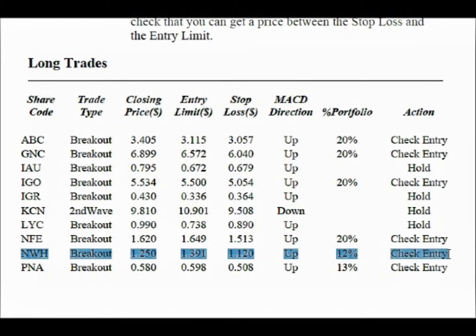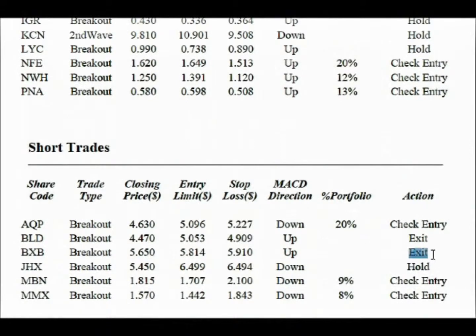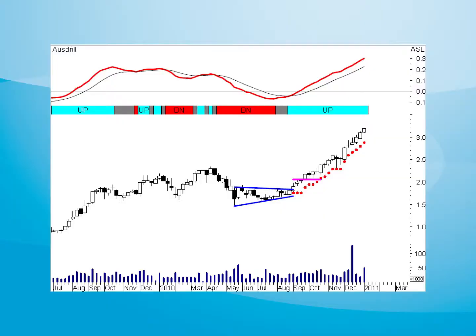The last column in the data tables gives you precise instructions for trading. If the action says 'check entry', then you may be able to buy depending on if you can get a price between the entry limit and the stop loss. If the action says 'hold', it means the stop loss is past the entry limit and an entry is no longer possible. However, if you are already in this share then continue to hold it. If the action says 'exit', then exit you must. Something has triggered an exit, either the momentum or the stop loss. These data tables are very convenient and the charts give an excellent visual of each particular trade.